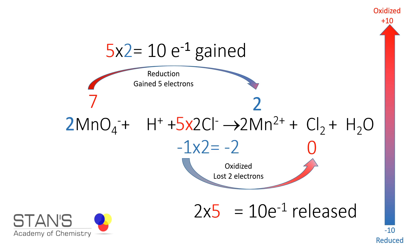To balance manganese on left and right, we put two in front of Mn²⁺ on the product side. Similarly, we put a coefficient of five in front of Cl₂ to get 10 chlorine atoms. We have now balanced the manganese atoms and the chlorine atoms on both sides.